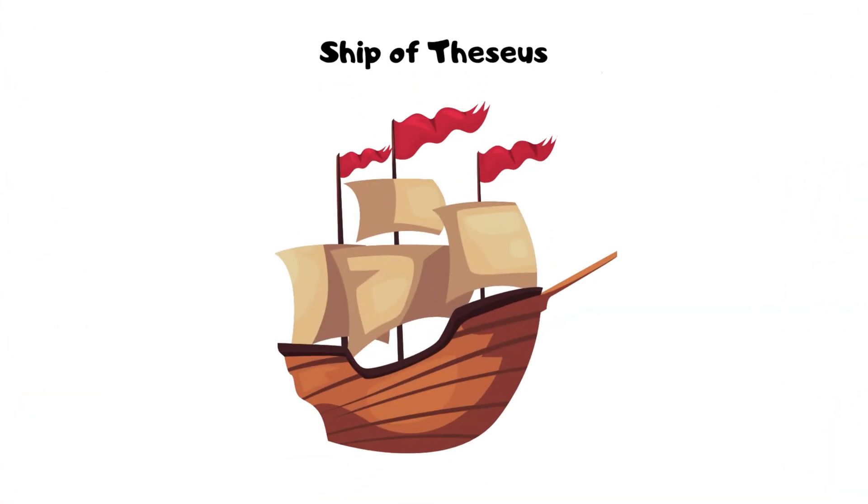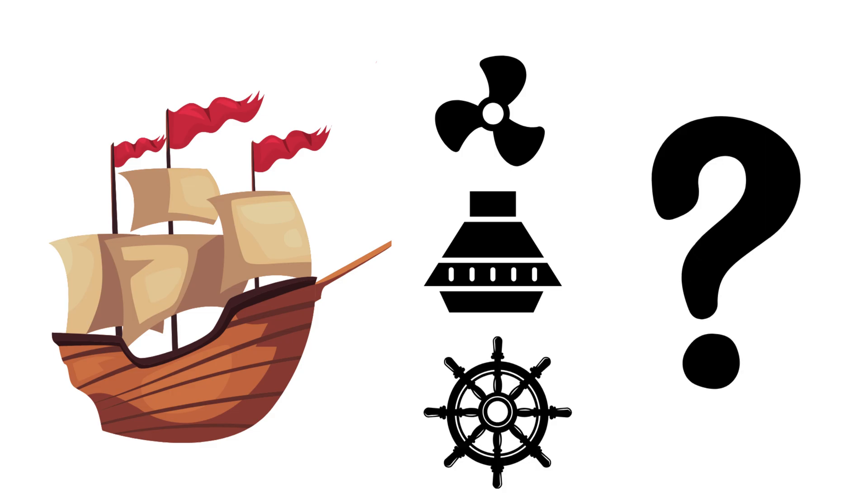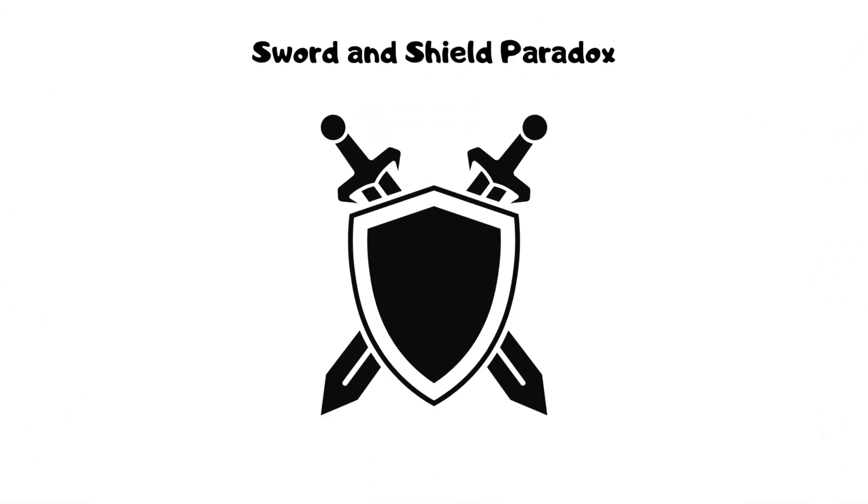Ship of Theseus. When all the parts of a ship are replaced, is it still the same ship? Birthday paradox. In a group of 23 people, the probability of two people sharing the same birthday is more than 50%.